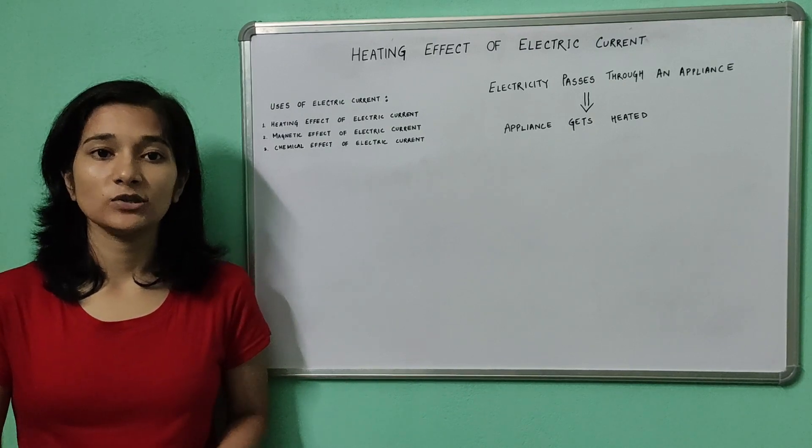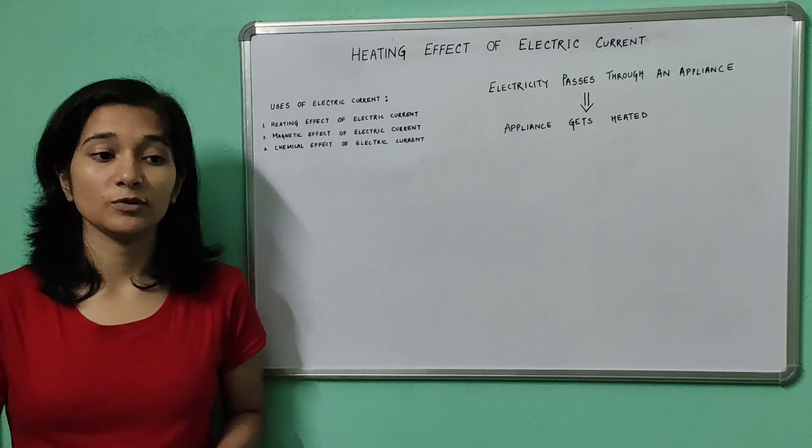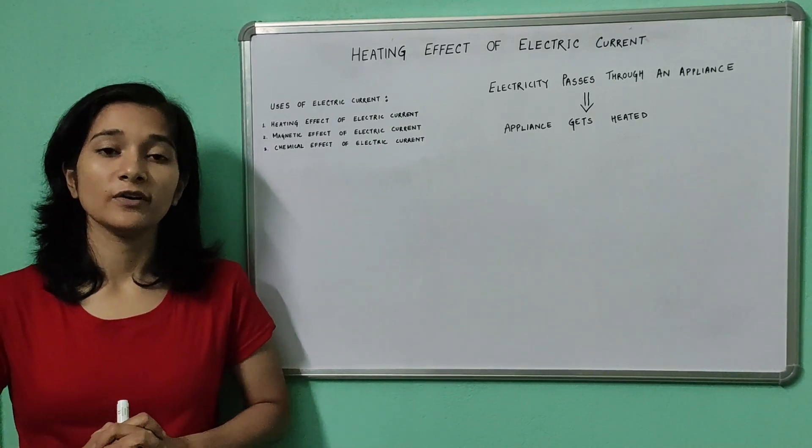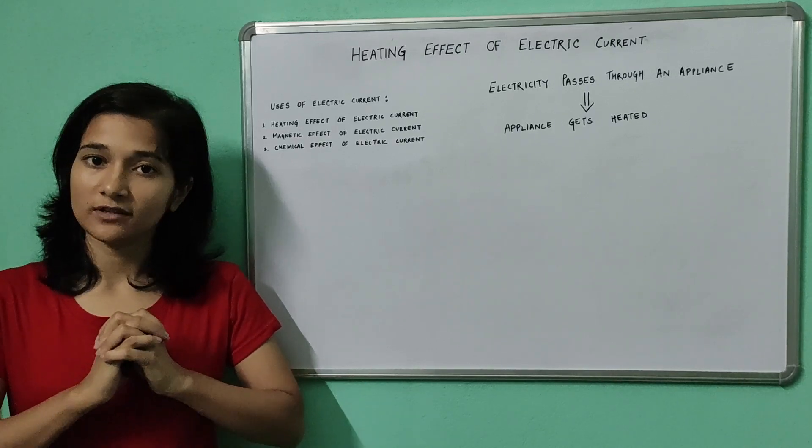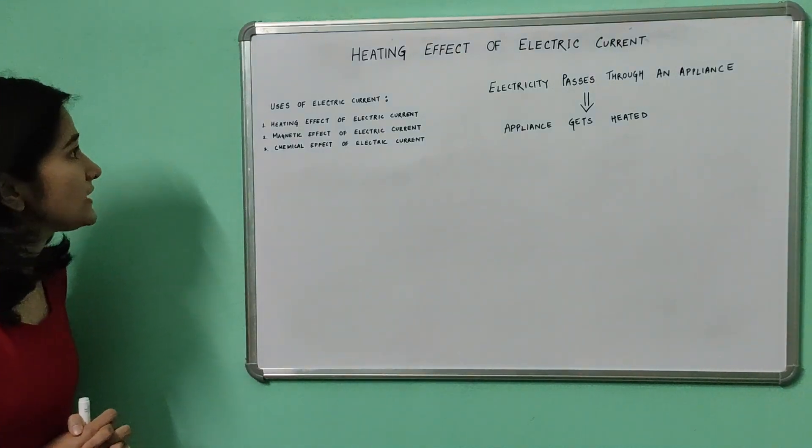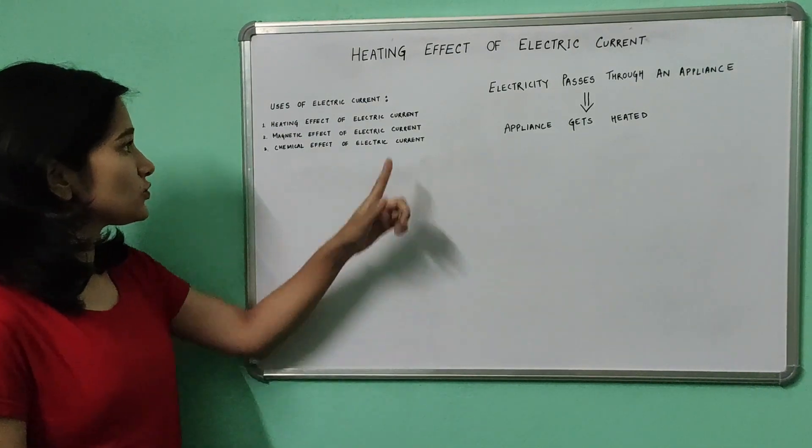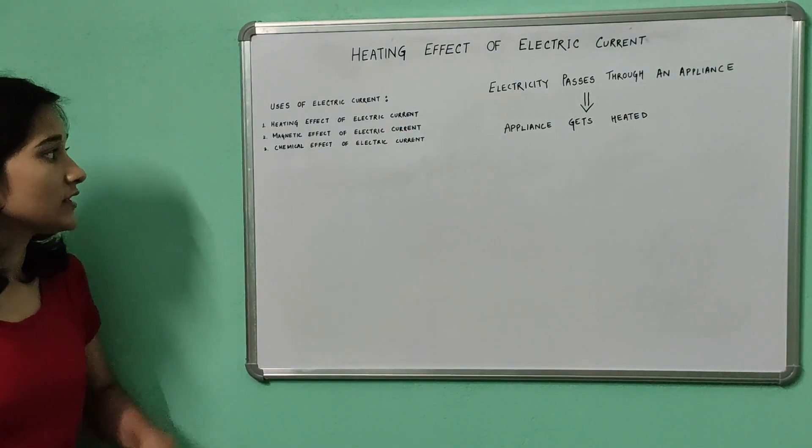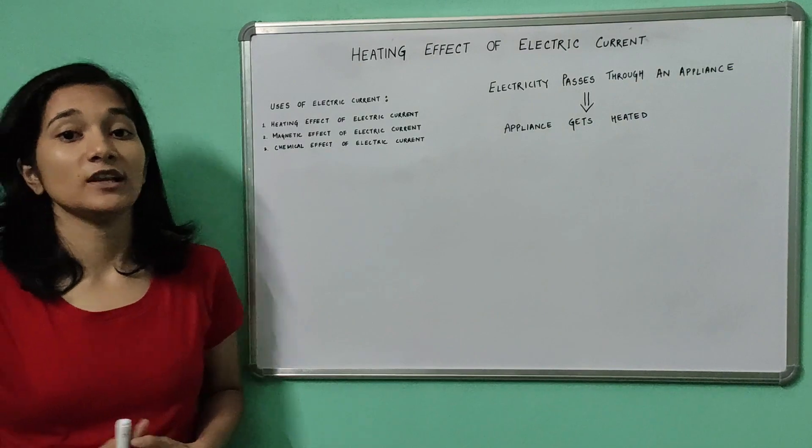You cannot think of life without electricity. If we broadly classify the uses of this electricity or electric current, we can get three types: number one is the heating effect of electric current, number two is the magnetic effect of electric current, and the third is the chemical effect of electric current.